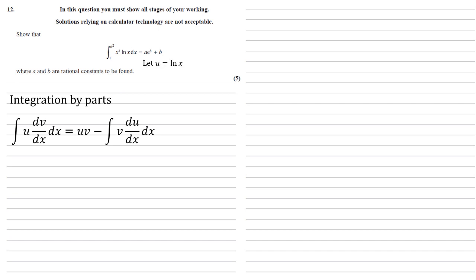So because of that reason, we're going to let our u equal ln x. So this is going to be the one we differentiate, which means that dv by dx is going to be the x cubed, the one that's easier to integrate.